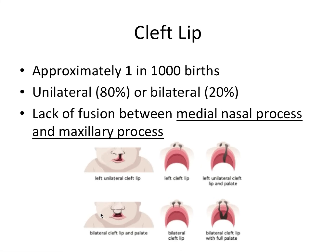So the first one we're going to talk about is cleft lip, approximately one in 1,000 births — relatively rare. Unilateral is about 80% of the time, whereas bilateral is only about 20% of the time. Most importantly, this is a lack of fusion between the medial nasal process and the maxillary process — basically between the philtrum area, which is under the middle of the nose, and the lateral lip cheek area. These are embryologic structures that fuse together to form the face.